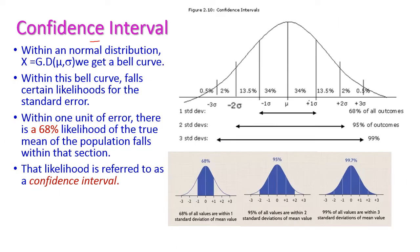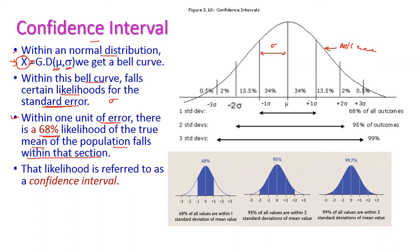Within a normal distribution, x may be a randomly taken variable from the entire population that lies under the Gaussian distribution with respective mu and standard deviation, giving us a bell curve. Within this bell curve, certain likelihoods of the standard error are defined by sigma. Within one unit of error — one sigma — there is a 68 percent likelihood of the true mean of the population falling within that section; that is, mu lies between minus sigma to plus sigma, otherwise called the first standard deviation.